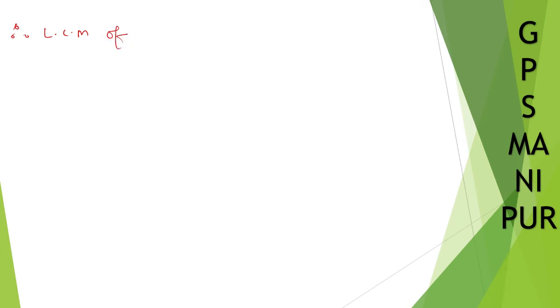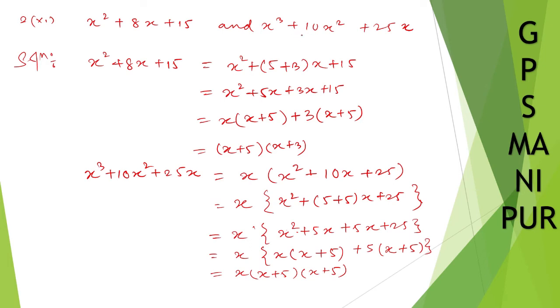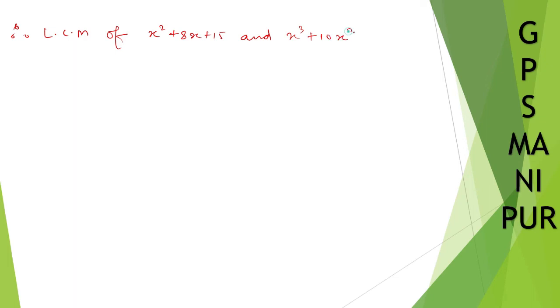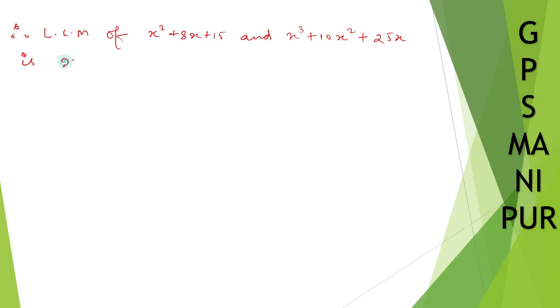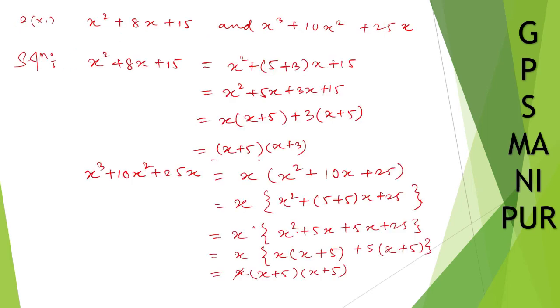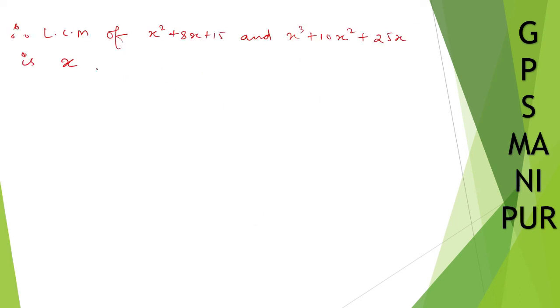Therefore, for the LCM of x squared plus 8x plus 15 and x cubed plus 10x squared plus 25x: the factors are (x plus 5)(x plus 3) and x(x plus 5) squared respectively. We take x as one factor, and (x plus 5) is common to both so we take it.